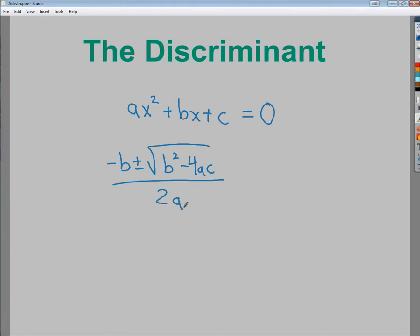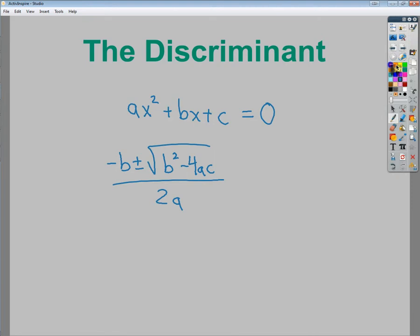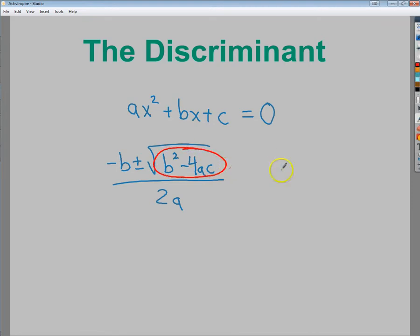The interesting thing about it is the part that's under the square root here. That's the part we're concerned about right now. The b² - 4ac actually gives us a number that will help us to say something about the type of solution before we even do the problem. And this is referred to as the discriminant.